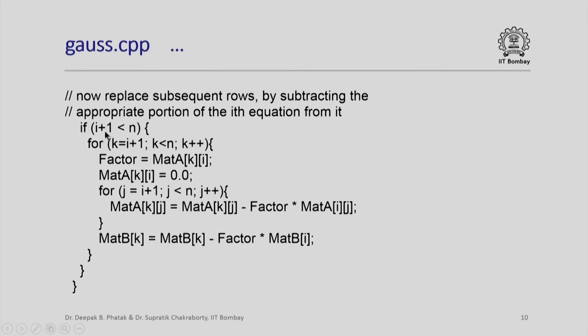So, if i plus 1 is less than n, then for k equal to i plus 1 to k less than n that is k to n minus 1, we now calculate a factor which is nothing but mat A[k][i]. This is the factor by which we have to take a portion of this row subtract the i th equation from it. But having taken that portion, we set that to 0 because this will be the column under the i comma i th row i comma i th element which is going to be 1.